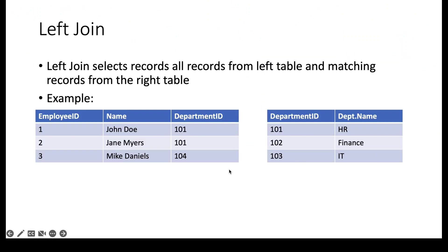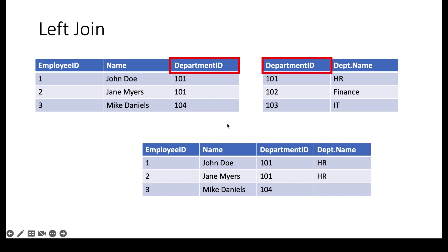Now let's take a look at the left join, using the same two tables — the employee table and the department table. The left join will always return all the records from the left table. If we perform a left join, we get all three records: John Doe, Jane Myers, and Mike Daniels, with their department IDs. Wherever there is a match in the department table, that information is populated — so 101 returns HR, and 104 returns null.